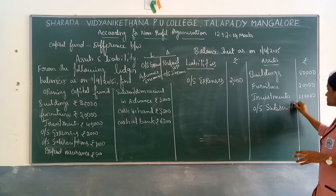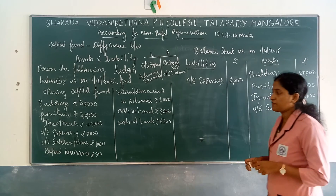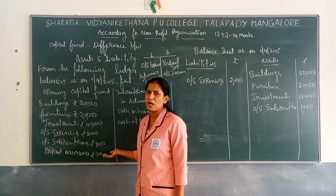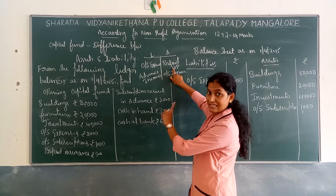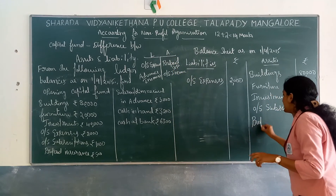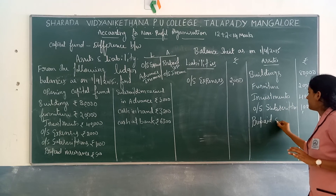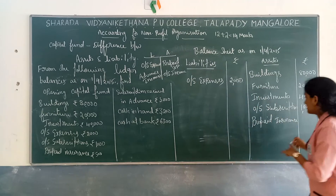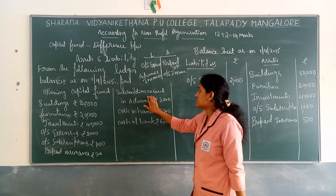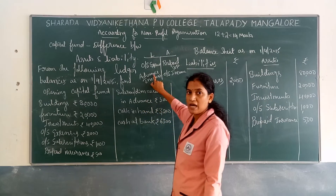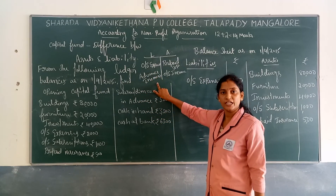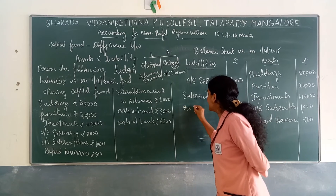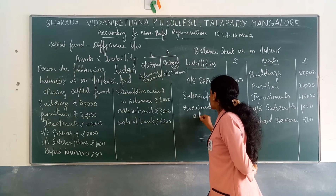Next is Prepaid Insurance. Insurance is an expense for the organization. Prepaid means paid in advance. Prepaid expenses are considered as Assets, so Prepaid Insurance rupees 500 is written under Assets. Next is Subscription Received in Advance. Subscription is an income, and income received in advance is considered a Liability. So Subscription Received in Advance rupees 3,000 is written under Liabilities.